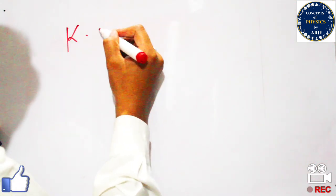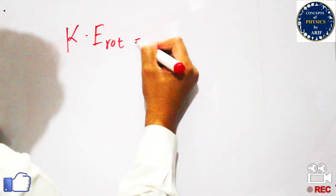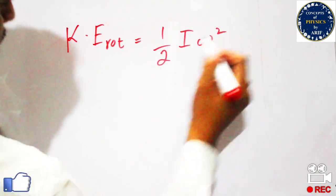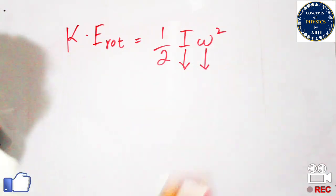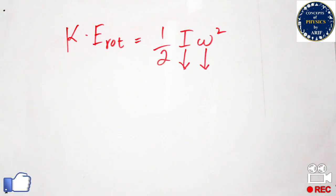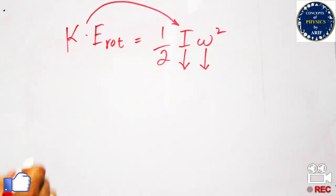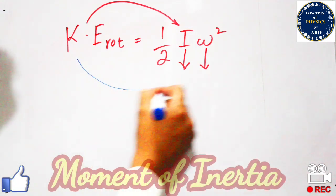We know the formula of rotational kinetic energy generally. Rotational kinetic energy directly depends upon the moment of inertia. The rotational kinetic energy of a body is equal to one-half I omega squared, where I is the moment of inertia and omega is the angular velocity. So rotational kinetic energy depends upon both the moment of inertia and the angular velocity of the body.